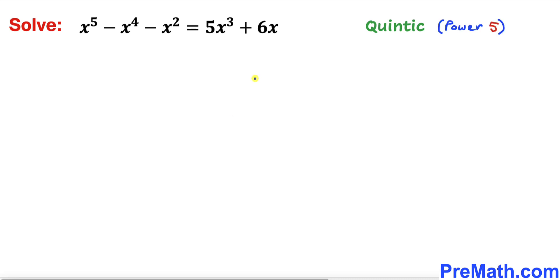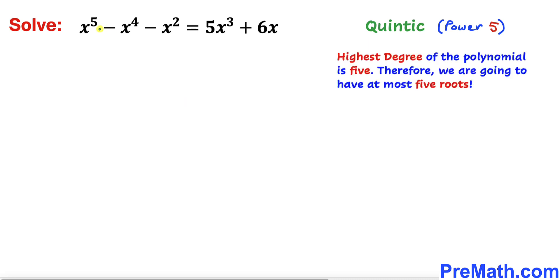Let's get started with the solution. The first thing we observe is that the highest degree of this polynomial is 5. Such a polynomial is called quintic, and since the highest degree is 5, we are going to have at most 5 roots — sometimes called solutions or zeros.